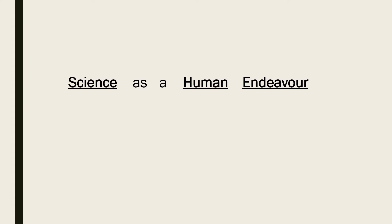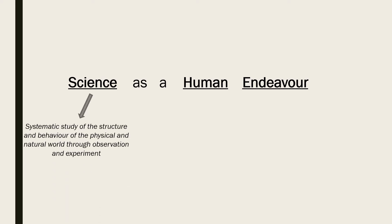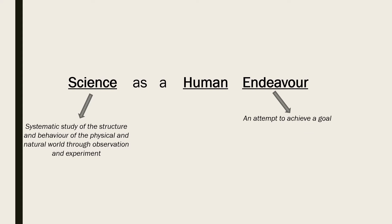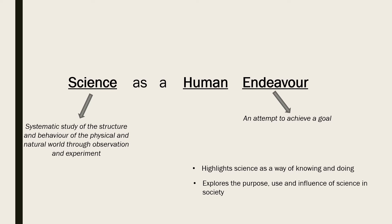So what does science as a human endeavour actually mean? Let's start by breaking down the meaning of each part of the phrase. Science is the systematic study of the structure and behaviour of the physical and natural world through observation and experiment. Endeavour is an attempt to achieve a goal. Therefore, when taken together, science as a human endeavour highlights science as a way of knowing and doing, and explores the purpose, use and influence of science in society. It involves investigating the dynamic nature of psychology and how psychologists develop new understanding and insights and produce innovative solutions to everyday and complex problems and challenges.